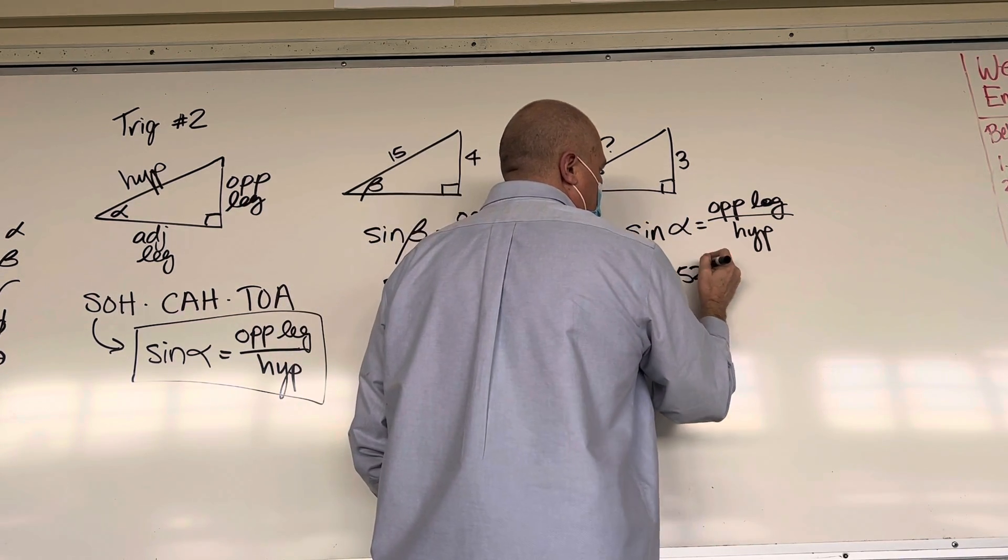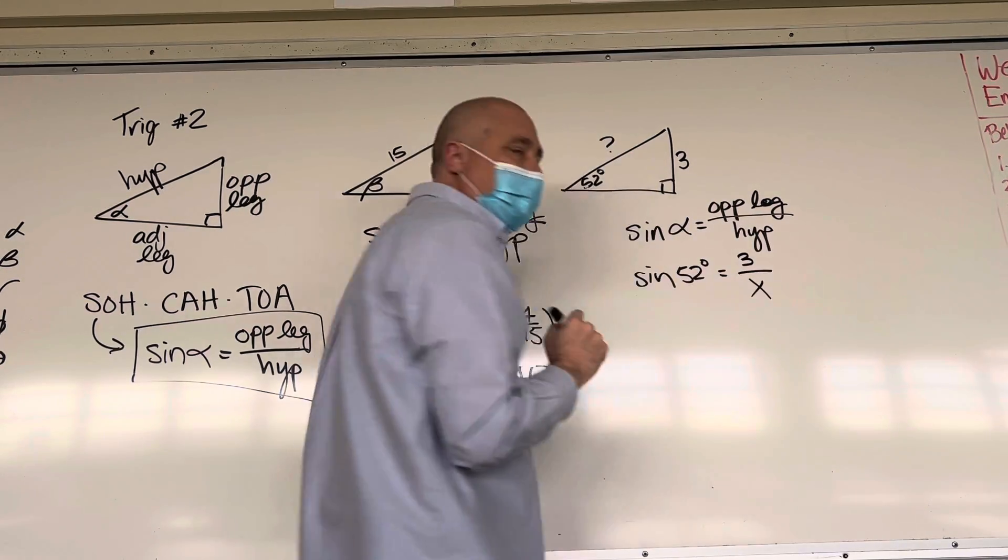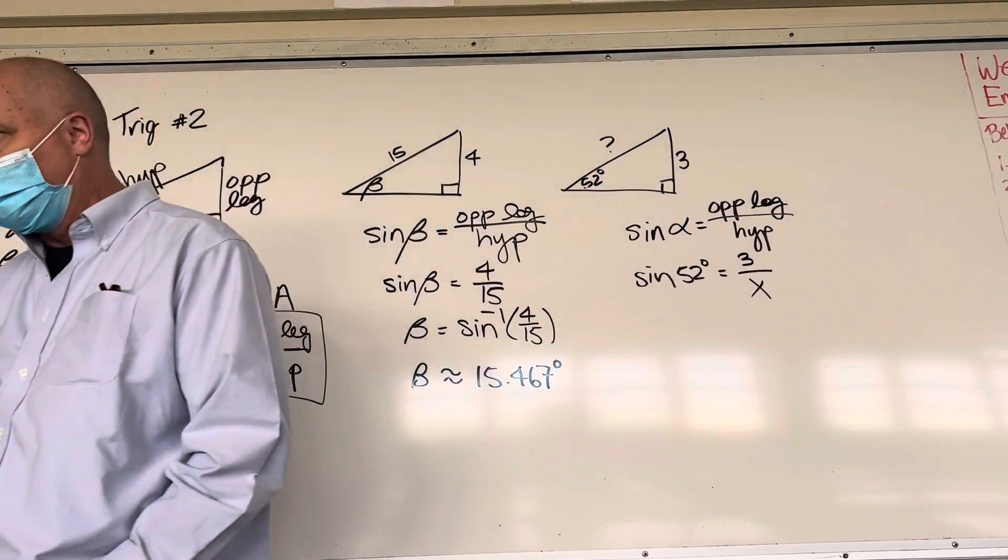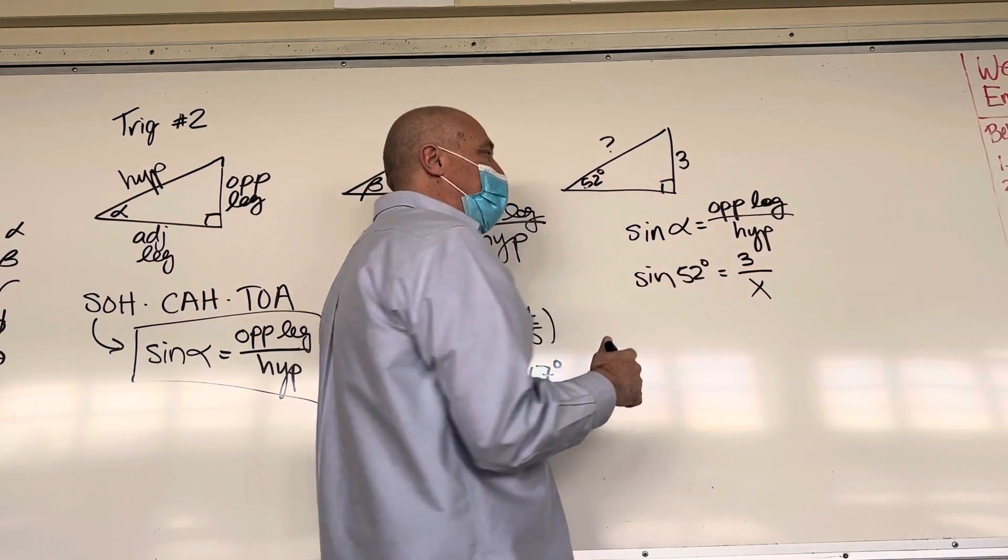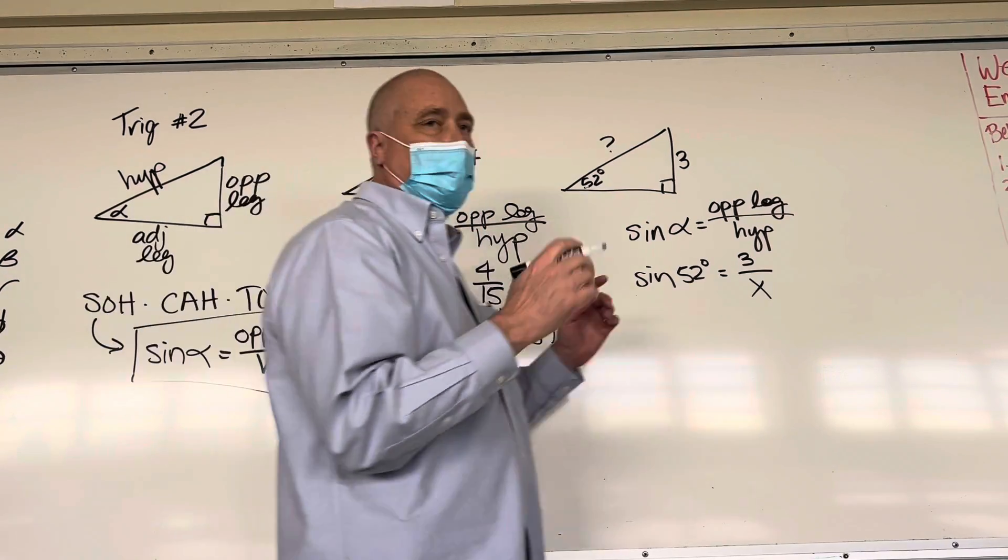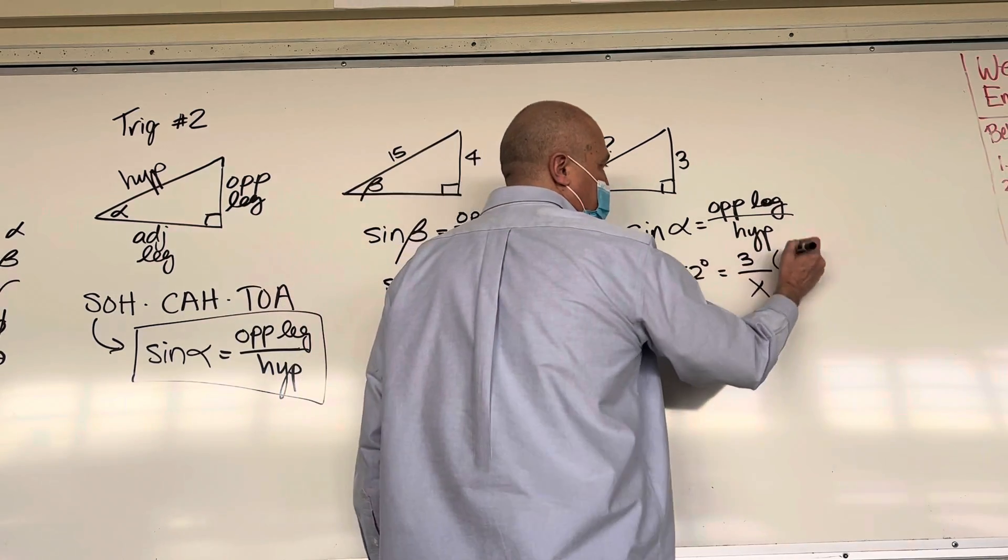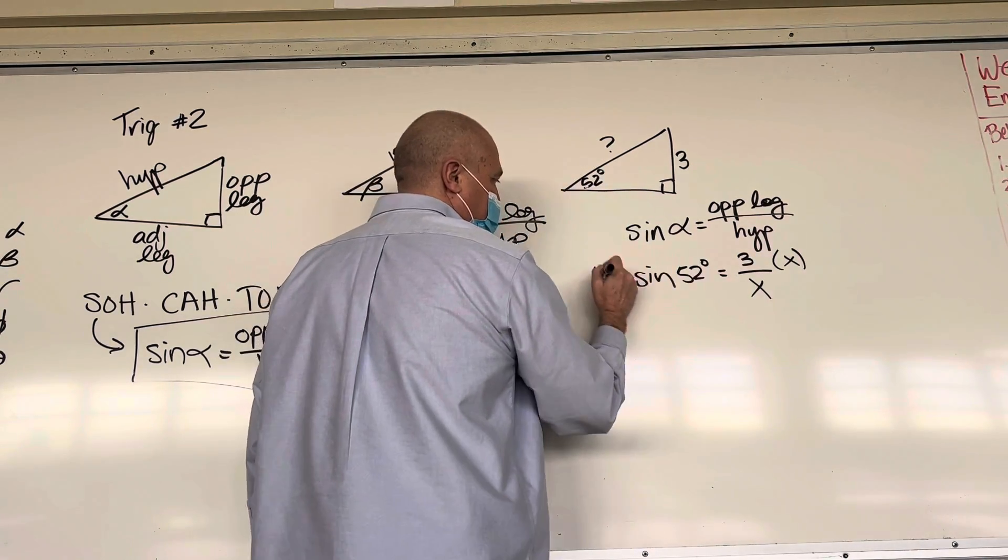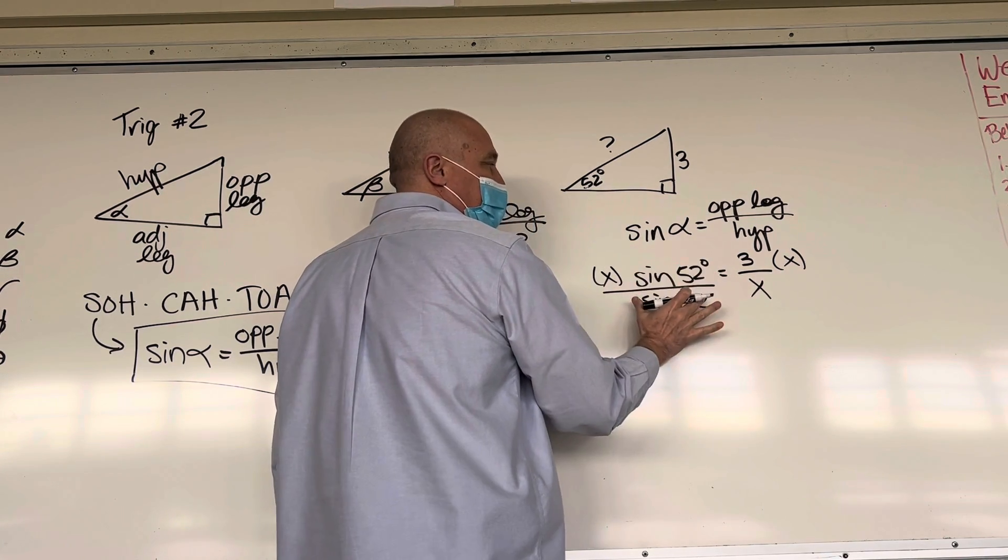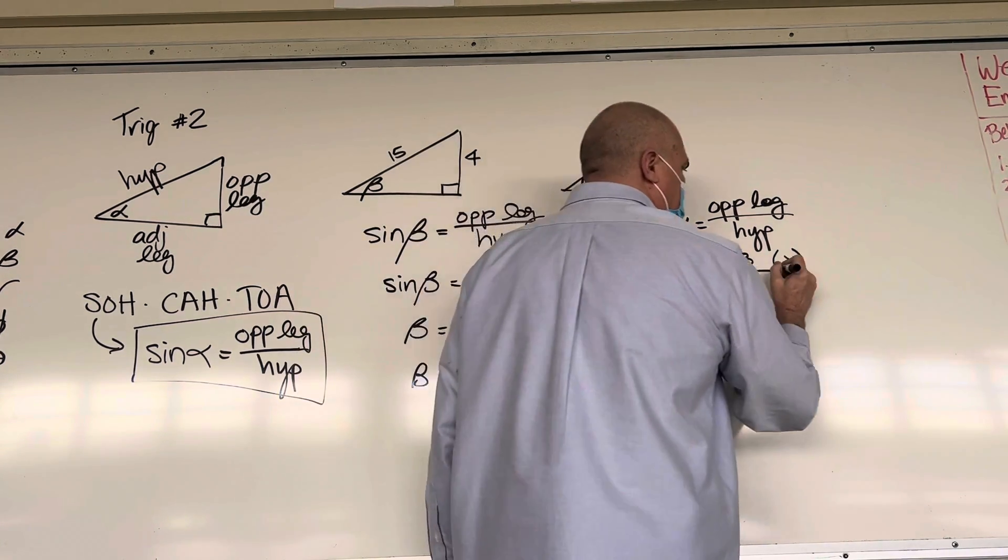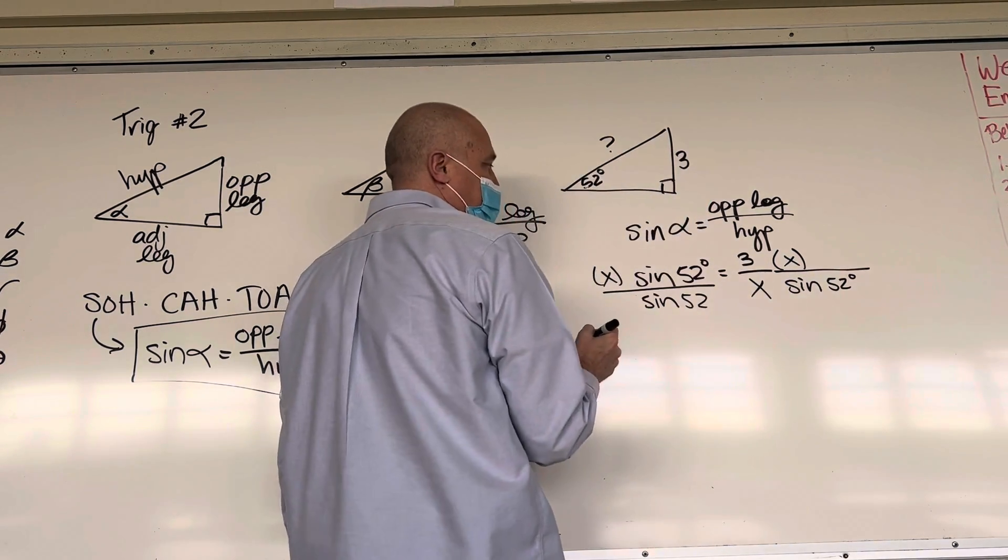Sine. In this case we are given the angle. So 52 degrees goes in for this. The op leg across here is 3. The hyp in this case is x. It's the unknown and it's not an angle. So we use the x again. Then we're going to move around some algebra here. Now it is a proportion and later you're going to swap it and do this much more quickly. But let's do the algebraic way right now. Let's multiply both sides by x. Divide both sides by sine 52.